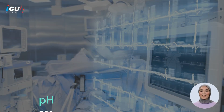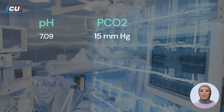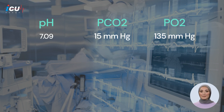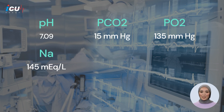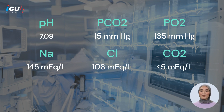The patient's arterial blood gases showed a pH of 7.09, pCO2 level of 15 mmHg, and pO2 level of 135 mmHg. The serum electrolyte tests showed a sodium level of 145 mMol/L and a chloride level of 106 mMol/L.